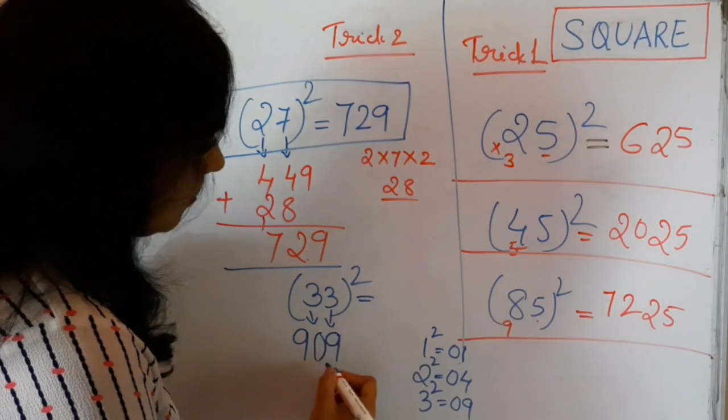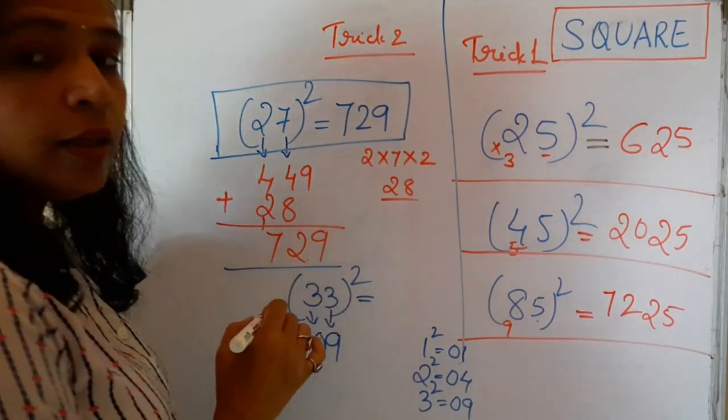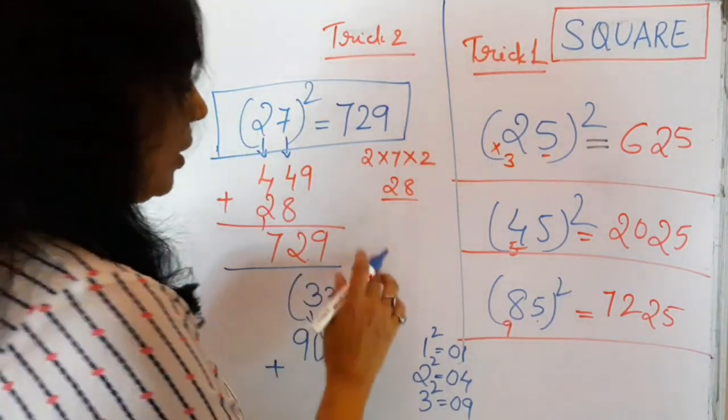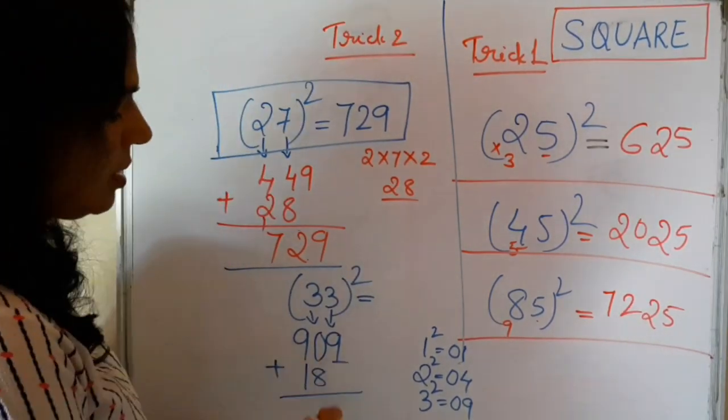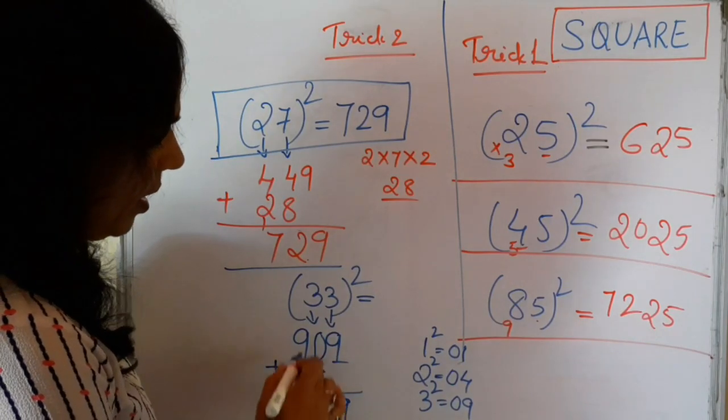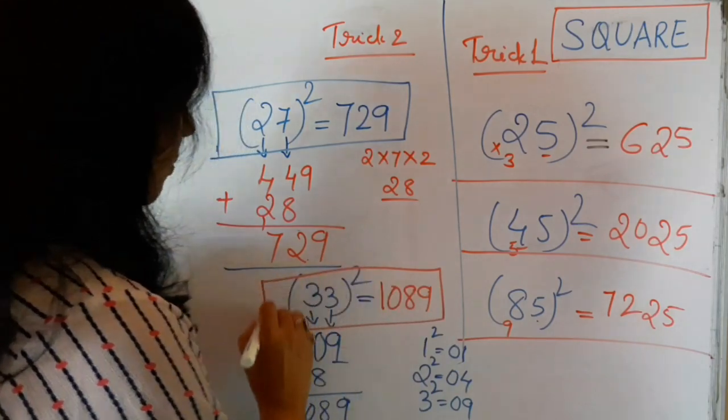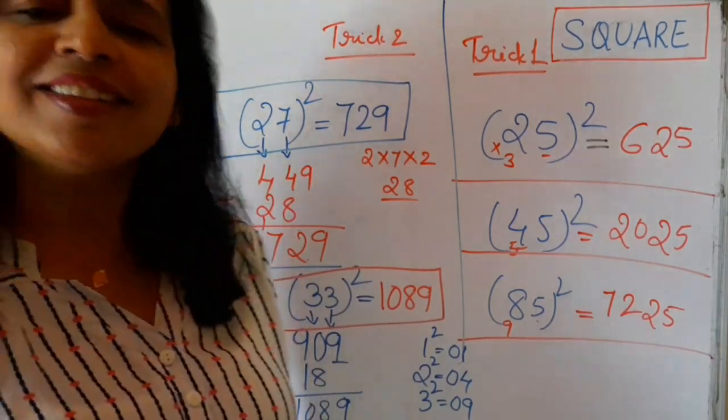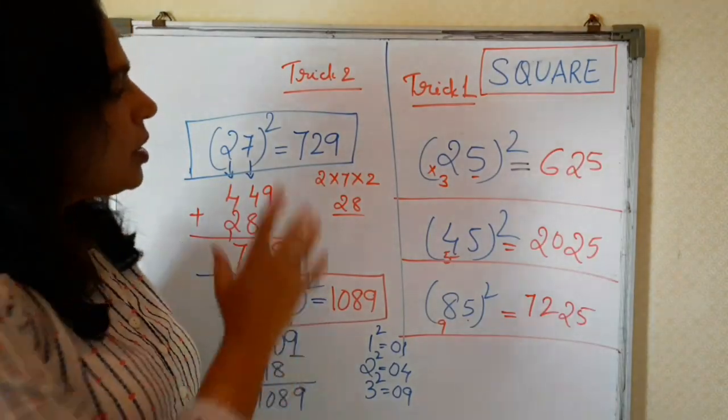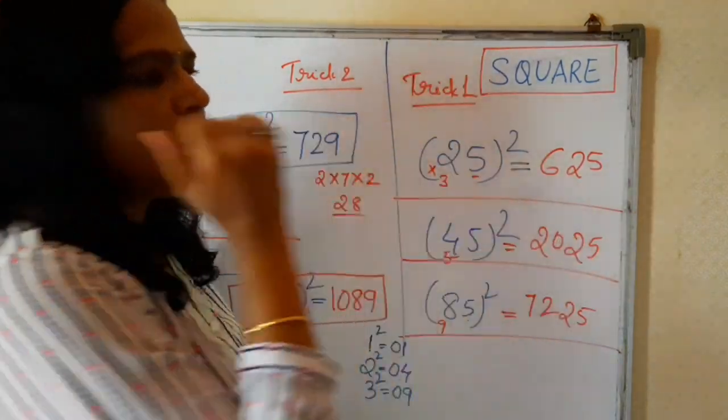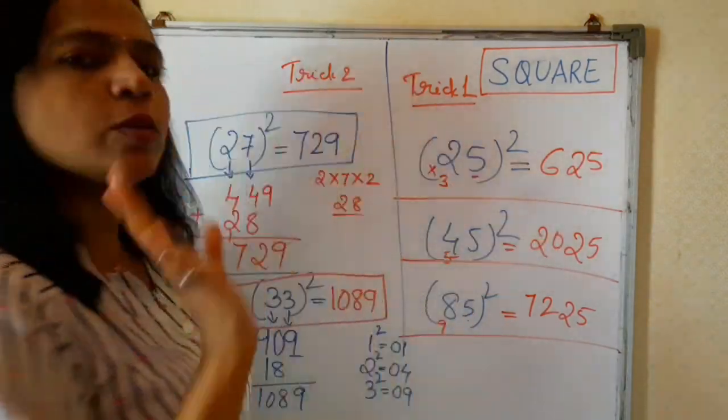Note this point. When there is 1 square, you will write 0, 1. If it is 2 square, you will write 0, 4. If it is 3 square, you will write 0, 9. Note this point. Because, whenever it is squaring, in the unit place, also you should have 2 digits. Now, next step 2 is multiply 3 into 3, 9. 9 into 2 is 18. So, add this 18, leaving 1 place. So, 9, 8 and 9 plus 1 is 10. So, this is our square of 33. Isn't it easy? You can use this trick to this also.